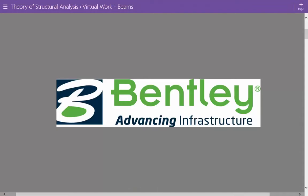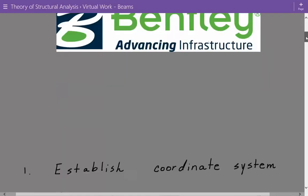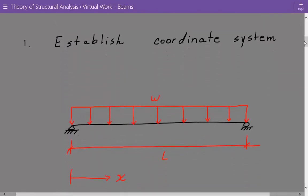Coming back to our simply supported beam problem — the first thing we need to do is establish a coordinate system. We need to establish an appropriate coordinate system that is valid within regions of the beam where there is no discontinuity of real or virtual loads. Because this is a simply supported beam with uniform loading, there is no discontinuous loading, so we'll just need one coordinate system going from support A, left to right.